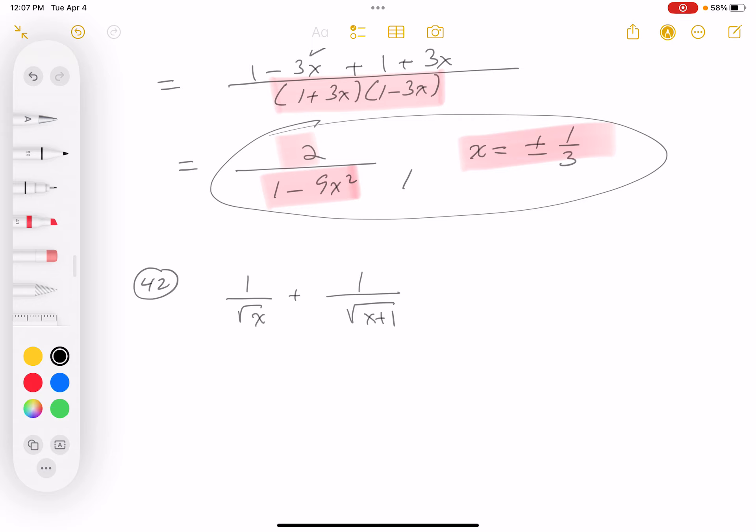I'm going to rationalize the denominators first. And how do you do that? Well, they're pretty easy to rationalize. It's going to be root x plus 1 over root x plus 1. And for the first term, it's root x over root x.